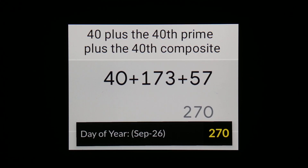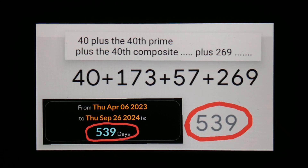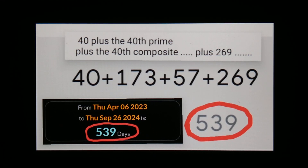Just for fun, if we add the 269 we were talking about originally: 40 plus 173 plus 57 plus 269 — said another way, that's 40 plus the 40th prime number plus the 40th composite plus the 57th prime number — equals 539. It just so happens that from last year's April 6th, which leaves 269 days remaining, until this year's September 26th is 539 days: 40 plus the 40th prime plus the 40th composite plus 269.